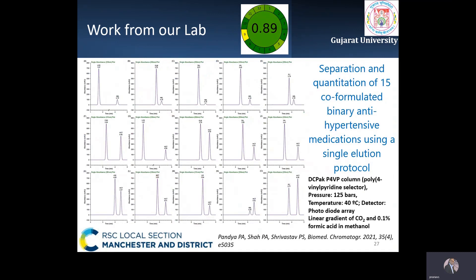In another method, we were able to separate 15 co-formulated binary antihypertensive drugs using a single elution protocol consisting of a linear gradient of carbon dioxide and 0.1% formic acid in methanol. Binary combinations with amlodipine and hydrochlorothiazide were separated within five minutes, and the greenness score was 0.89 using the AGRI metric. These were the SFC-based methods we developed, all evaluated for method greenness using the AGRI metric.